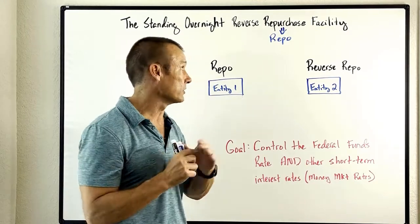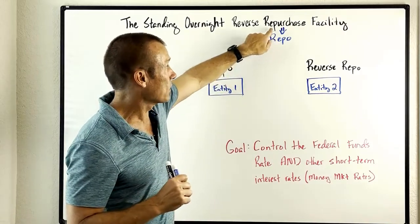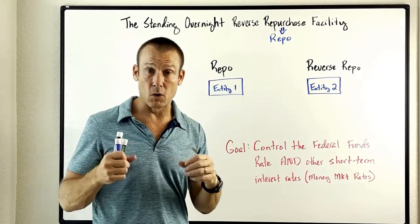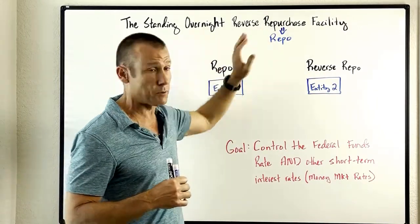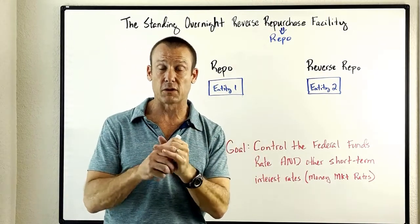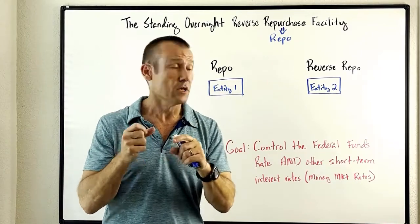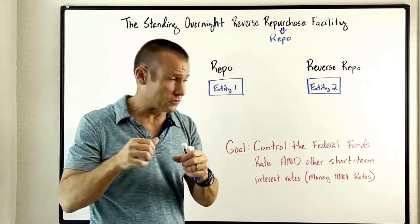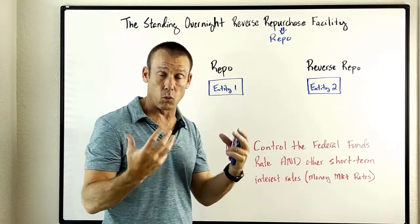A couple things on terminology. You might hear the term 'repo market' — repo comes from the word repurchase. There's repo and then there's reverse repo. I'm going to go into the mechanics of this and then get back to the broader implications. The Fed calls it the standing overnight reverse repurchase facility.